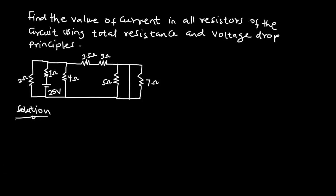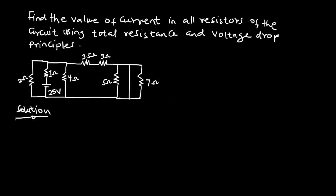Looking at the circuit, because of this empty path, the 5-ohm and 7-ohm resistors will be short-circuited, meaning no current will flow across them. Therefore we can exclude them from the circuit, because this path creates a route for the current to flow through instead. So we can exclude the 5-ohm and 7-ohm resistors and redraw the circuit.